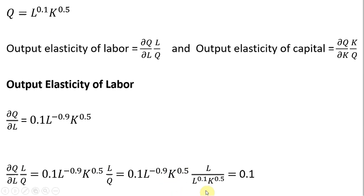K to the one-half divided by K to the one-half cancels. L divided by L to the 0.1 is just L to the 0.9 in the numerator, and L to the 0.9 multiplied by L to the minus 0.9 will cancel. So everything cancels but the 0.1. That is the output elasticity of labor. A 1% increase in units of labor will increase output by one-tenth of 1%.